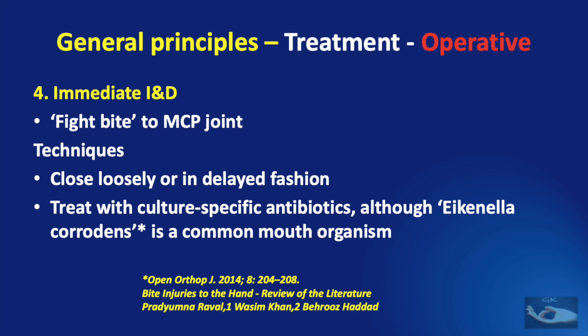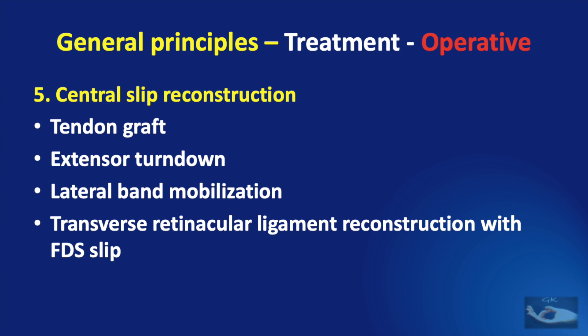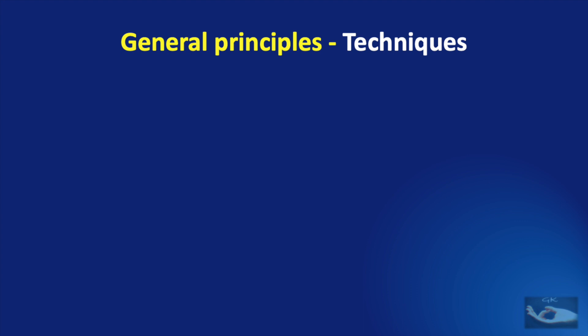Central slip reconstruction can be done with a tendon graft, an extensor turn-down, a lateral band mobilization, or transverse retinacular ligament reconstruction with an FDS slip. The procedure of tendon transfer is classically indicated for a chronic EPL rupture, where the extensor indicis proprius is used to perform the function of the EPL.